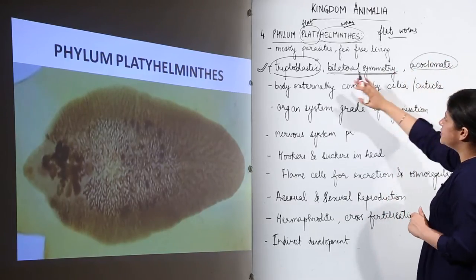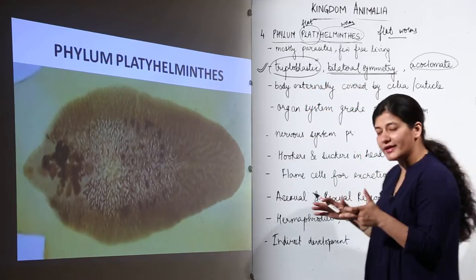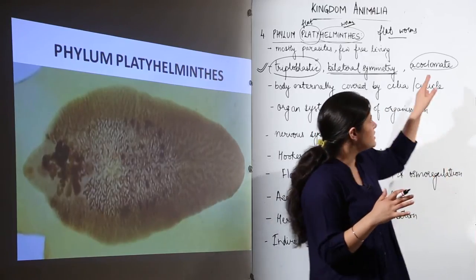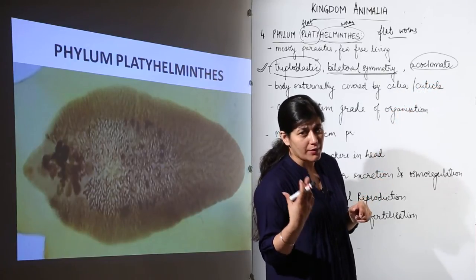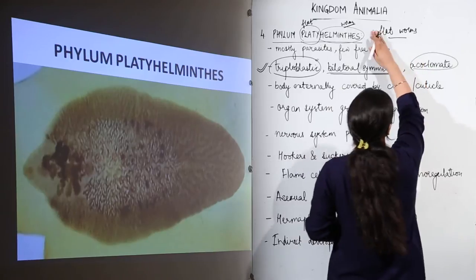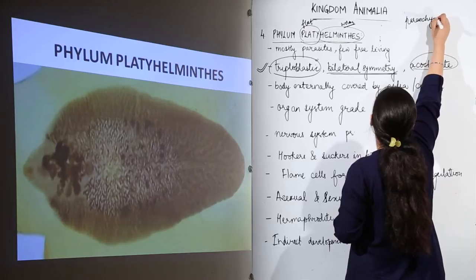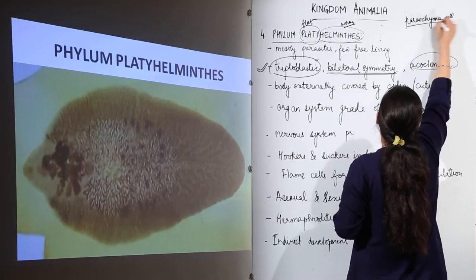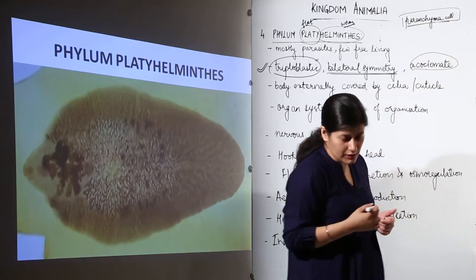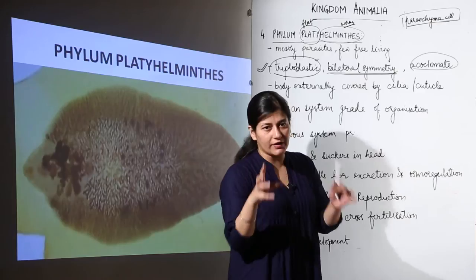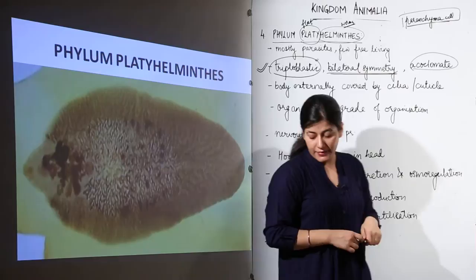Although they are triploblastic with three layers, we might expect a coelom, but there is no coelom present. Instead, the body cavity is filled by parenchymal cells secreted by the mesoderm. So what you must remember is that parenchyma cells, secreted by mesodermal cells, fill the body cavity — that cavity is not a coelom. Therefore, these organisms are acoelomate.